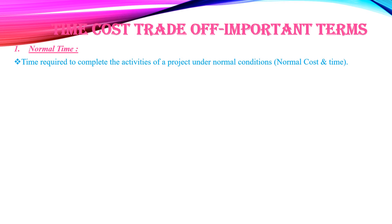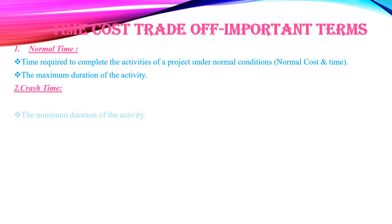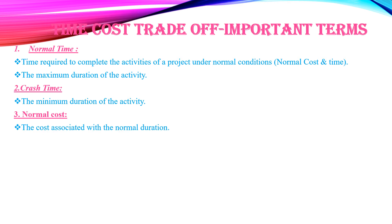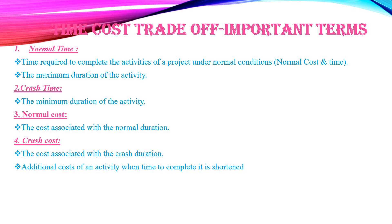Important terms associated with time-cost trade-off: Normal time is the time required to complete the activities under normal conditions at normal cost — it is the maximum duration of an activity. Crash time is the minimum duration for a particular activity. Normal cost is the cost associated with normal duration. Crash cost is the additional cost of an activity when its time is shortened; as project duration decreases, crash cost increases.